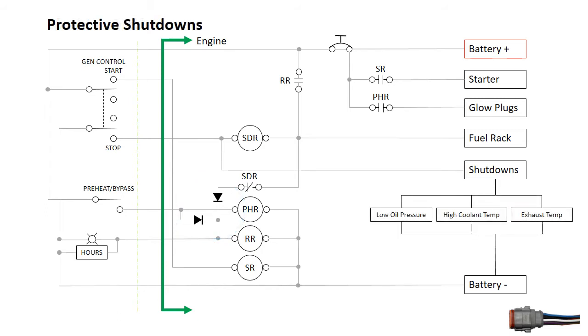The protective shutdown circuit consists of three safety switches that close to battery negative and trigger the shutdown relay when there is low oil pressure, high coolant temperature, or high temperature at the wet exhaust elbow.